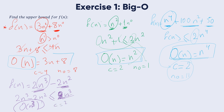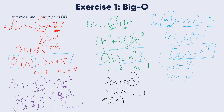Two more examples: find the upper bound of f of n equal to n. Here n is the only term, so n is less than or equal to 1 times n. The Big O notation is O(n), with c equal to 1 and n₀ equal to 1.